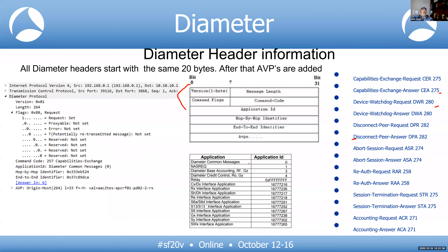Application IDs tell you which interface you're on — for example, GX or S6A. Each interface maps to a specific application ID. If the MME on S6A tries to talk to a PCRF, the capability exchange will detect that the application ID doesn't match GX and will disallow it. The Wireshark dissector converts these numbers to human-readable interface names in the background.